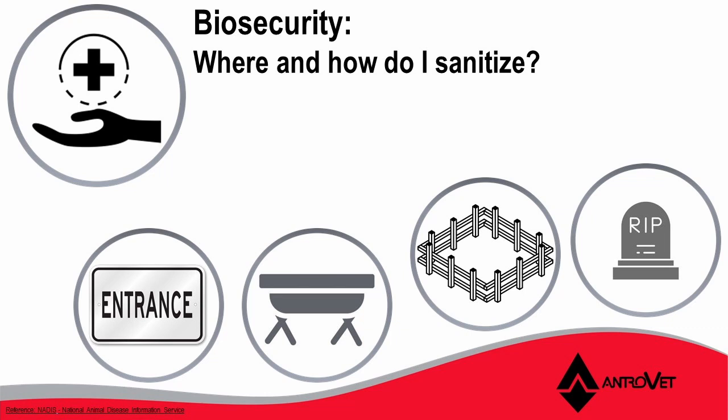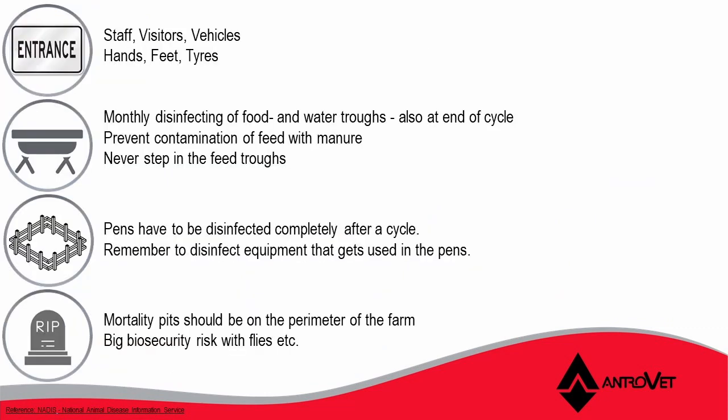As we know with COVID, it is very important to sanitize our hands and understand the effects thereof. At the entrance of the farm, the entrance of staff, visitors, vehicles, hands, feet, and tires are very important, as this is the way that pathogens can be transferred onto your farm. We need to look at water and food troughs as well, for that is where our sheep take their foodstuffs from, and that can also be one of the ways that a pathogen can enter the body of the sheep.